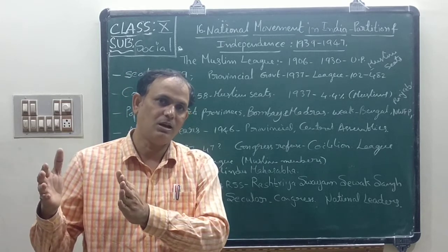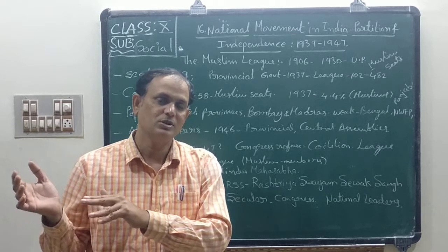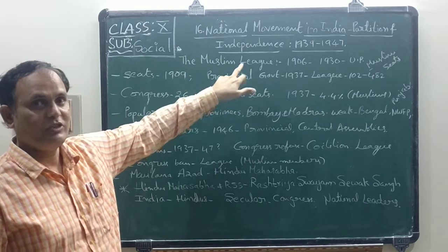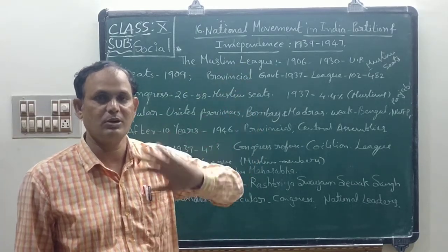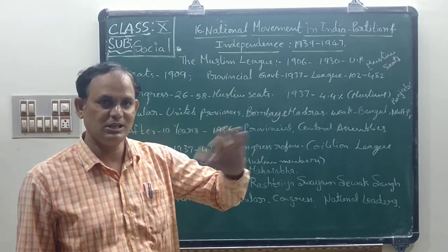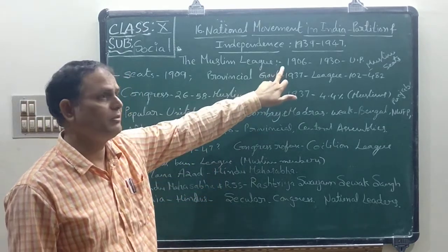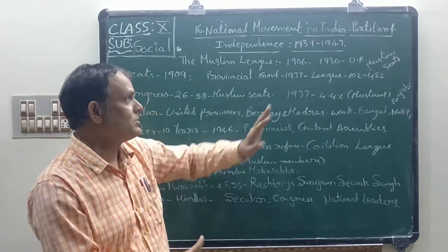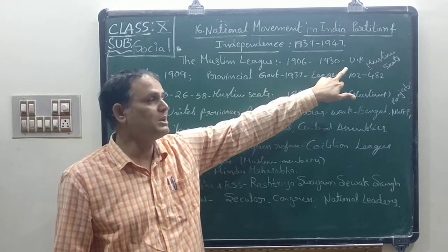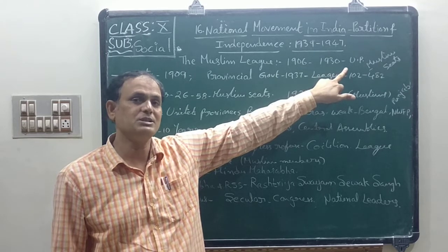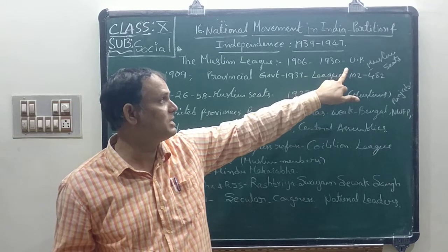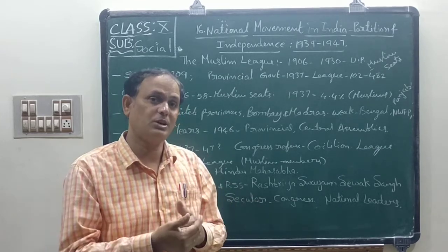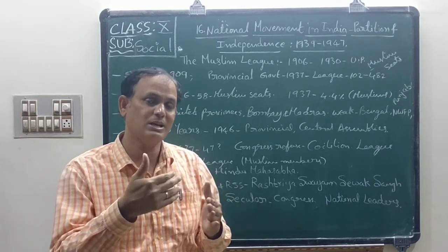Hindu Mahasabha and RSS were also started by Hindus, so many Hindus are supporting Hindu Mahasabha and RSS. The Muslim League was started in 1906 — this is very important. It was started for the purpose of some Muslim landlords living in Uttar Pradesh. Up to 1930, this Muslim League was not active and did not strive for the separation of our country. But after 1930, the Muslim League actively participated and fought against the Congress party, and also asked for the separation of our country as a separate nation.